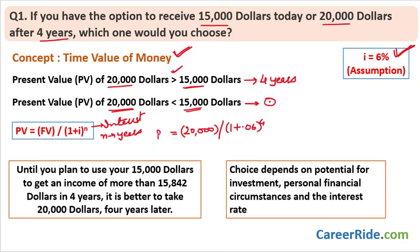I am trying to find out the present value of this money. When I did my calculations, I found this value to be $15,842, which is greater than $15,000. So unless you plan to use your $15,000 in such a way that you will be able to generate more than $15,842 in four years, it is better to take the money four years later and receive $20,000. If you cannot grow your money yourself, it is always better to take the money later.